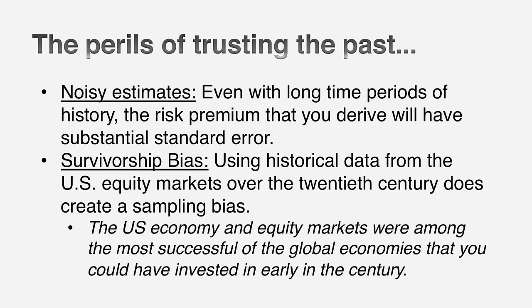The second problem, especially with US data, is survivorship bias. The most successful equity market of the 20th century was the US market. Using that market to estimate a forward-looking premium assumes you'll know what the most successful equity market will be for the next century — and you don't. A better measure of historical premium might average out the premiums across multiple markets, and there are databases that do that. But overall, a historical premium is a flawed, backward-looking way of thinking about equity risk that assumes everything reverts back to historic norms — an assumption the crisis of 2008 should have shaken your faith in.